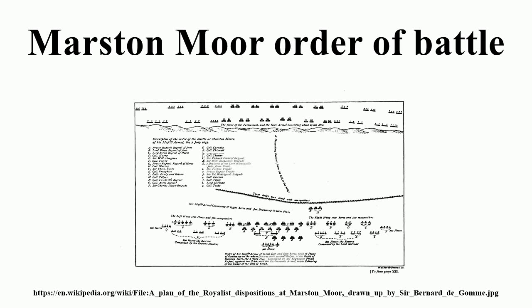This is the Order of Battle of the Armies which fought on 2 July 1644 at the Battle of Marston Moor: Covenanter and Parliamentarian Army of Both Kingdoms.